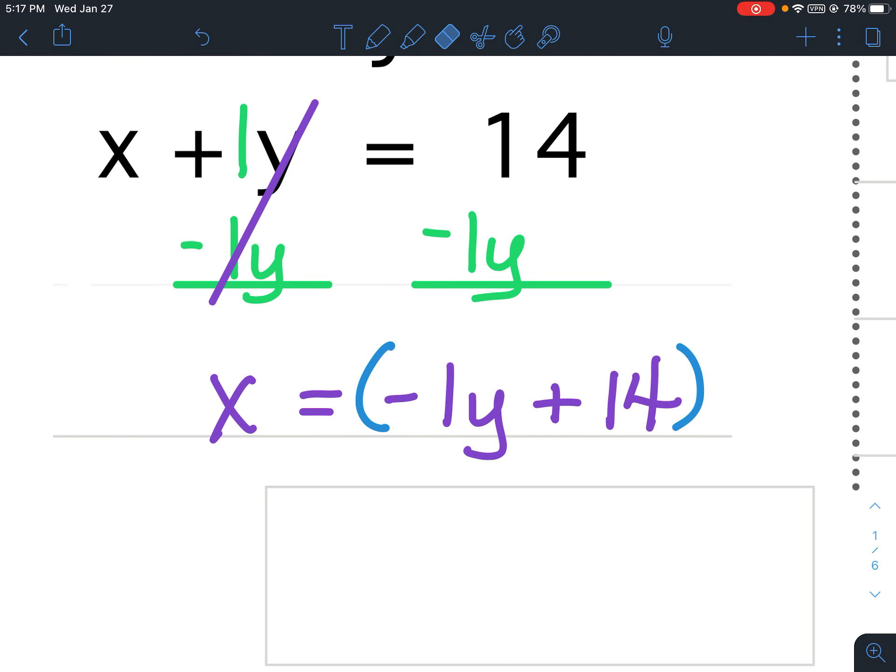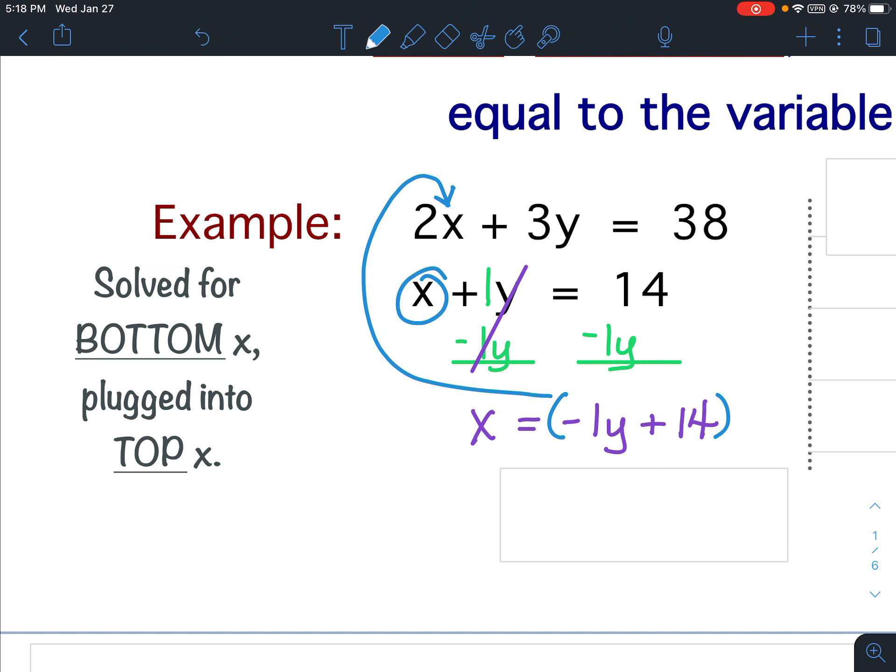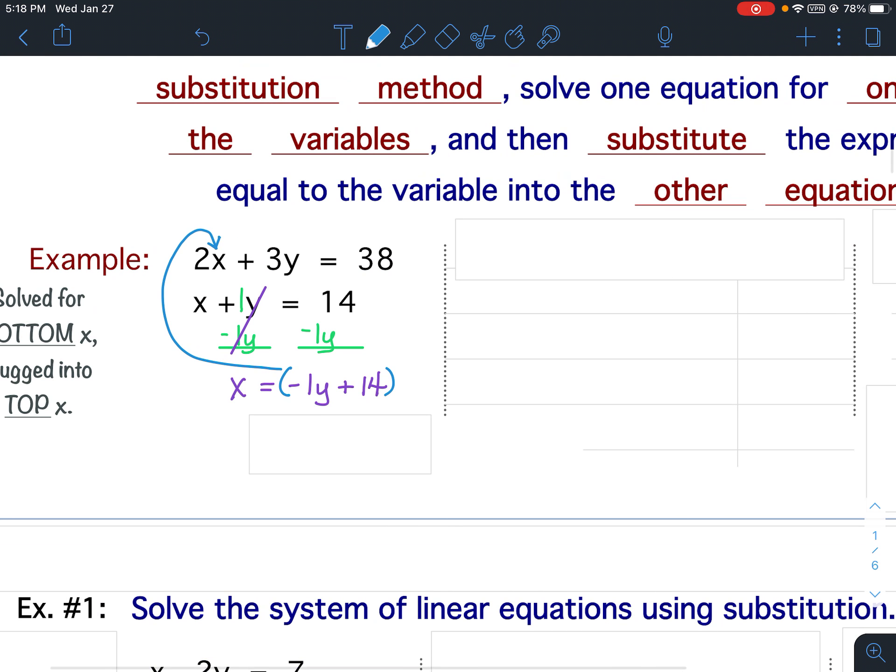So the expression negative 1y plus 14 will get substituted into the top x. Again, I solved for this bottom x, so I substitute into the top x. I solved for the bottom, so I substitute into the top. Alright, so this is what it's going to look like. I'm going to replace this x with what's inside the parentheses here. I'm going to replace the x with what's inside the parentheses. And this is what it looks like.